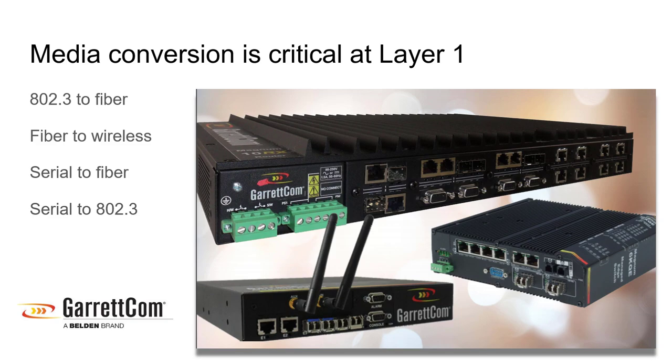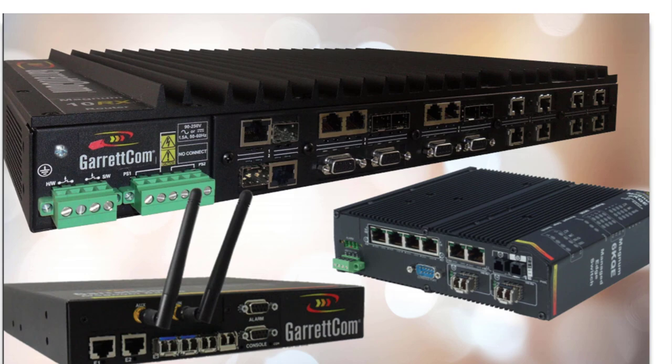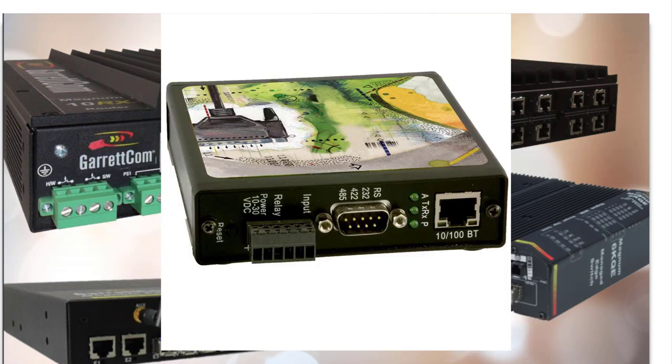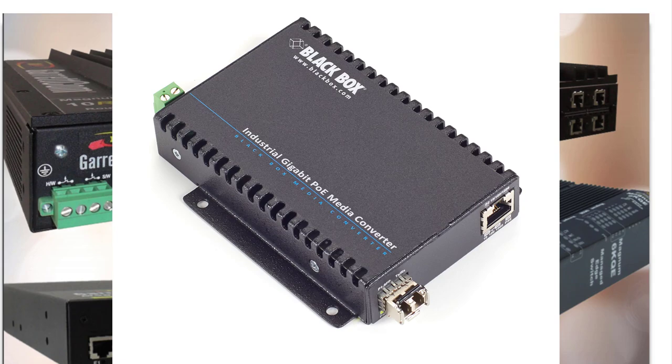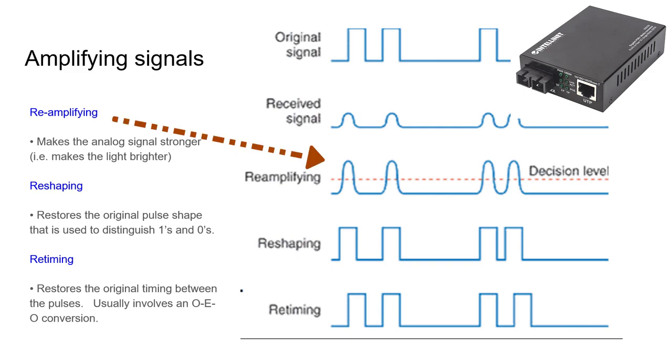Media conversion is critical at layer one. So we may need to go from 802.3 to fiber, fiber to wireless, serial to fiber, serial to 802.3. There are all kinds of companies that produce products for media conversion. This is layer one. Media conversion at layer one sometimes requires amplifying the signal, simply making the signal stronger or the light brighter. Sometimes it involves reshaping the original pulse shape to help distinguish between ones and zeros. And many times we also restore the timing between the pulses. This usually involves optical to electronic back to optical conversion.